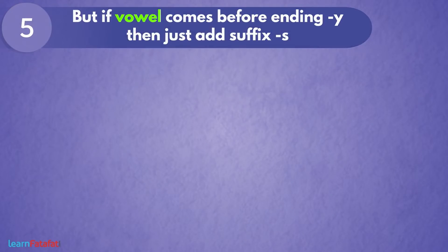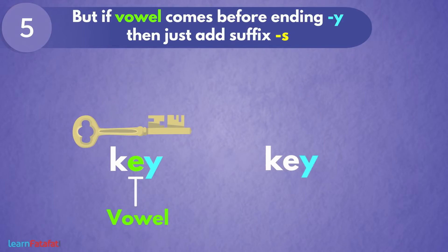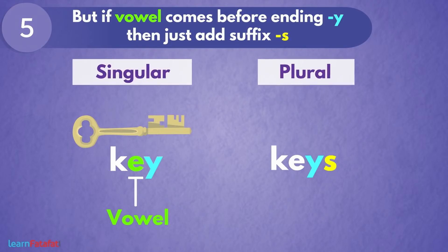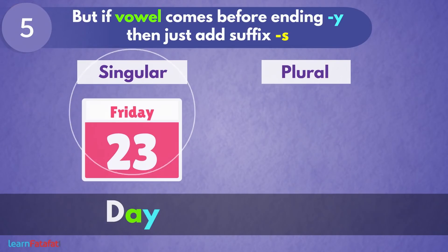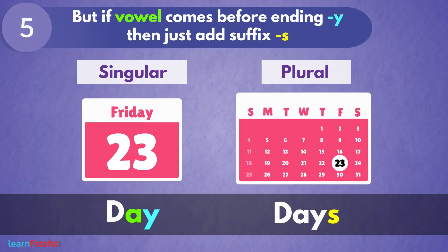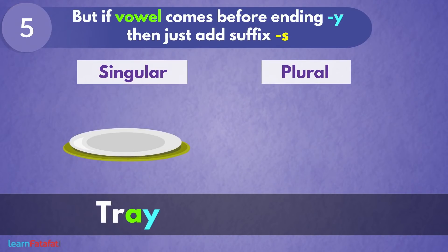But if a vowel comes before ending -y, then just add suffix -s. लेकिन अगर y के पहले कोई vowel आता है — जैसे key में y के पहले e यह vowel आता है — ऐसे समय सिर्फ -s suffix करके word का plural बनाया जाता है। इसलिए key का plural बना keys। ऐसे ही day का days, toy का toys, tray का trays।